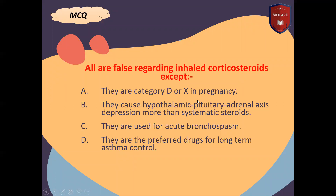Review question: All are false regarding inhaled corticosteroids except — A: They are category D or X in pregnancy. B: They cause hypothalamic-pituitary-adrenal axis depression more than systemic steroids. C: They are used for acute bronchospasm. D: They are the preferred drugs for long-term asthma control. The answer is D. Inhaled corticosteroids are safe in pregnancy — they are not category D or X, meaning there are no human or animal studies showing severe adverse reactions on the fetus.